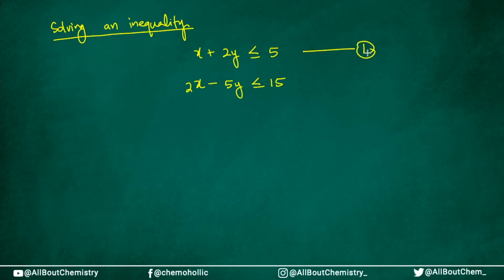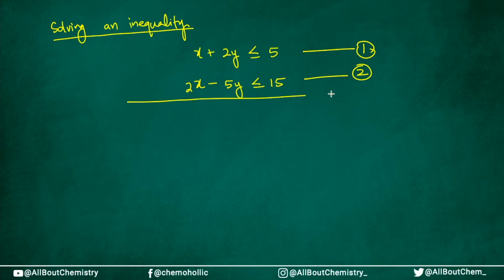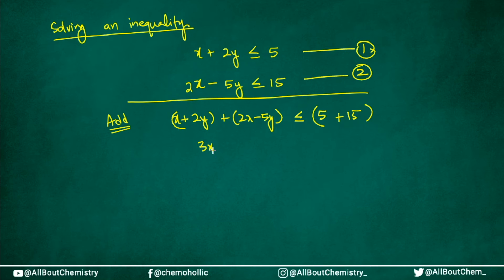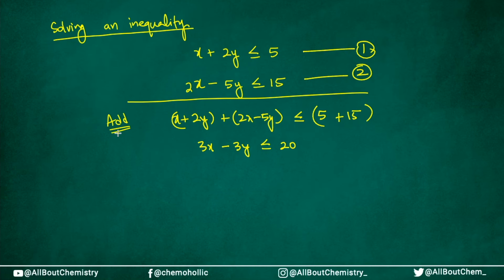Now let's see how to solve questions. Say equation 1 is x + 2y ≤ 5 and equation 2 is 2x − 5y ≤ 15. I can add both equations: left-hand sides give x + 2y + 2x − 5y, the inequality remains, and right-hand sides give 5 + 15. Opening the bracket: 3x − 3y ≤ 20. This is how you can add or subtract inequality equations to get a new combined equation.